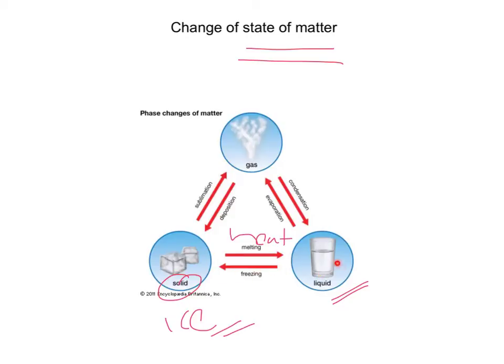If we go from a liquid to a gas, we can do that by adding more heat — we evaporate the liquid and turn it into a gas. Whereas if we take away heat from the gas, we can condense it to turn it into a liquid. So evaporation is turning a liquid into a gas, and condensation is turning a gas into a liquid.